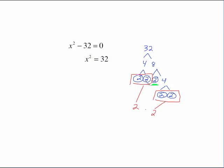Here's your tree on 32. We have two different pairs of twos, so we have a 2 times a 2 which is a 4 coming out with that 2 staying in. So our answer will be plus or minus 4 times the square root of 2.